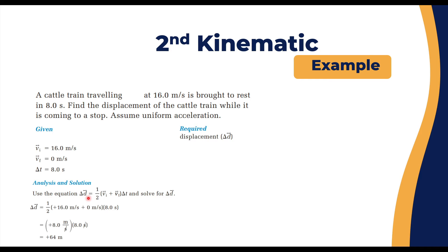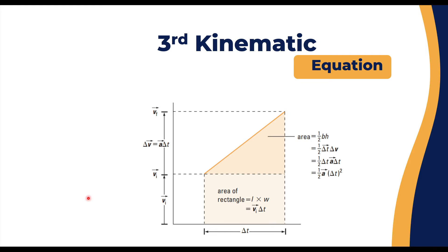The third kinematic equation comes from the same velocity-time graph. Instead of using the full trapezoid area, we split the shape under the curve into a rectangle and a triangle and add those two areas together. This different perspective on the same graph yields a new form of the equation of motion.